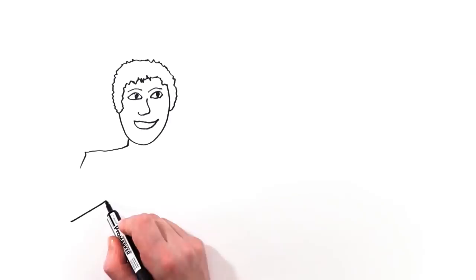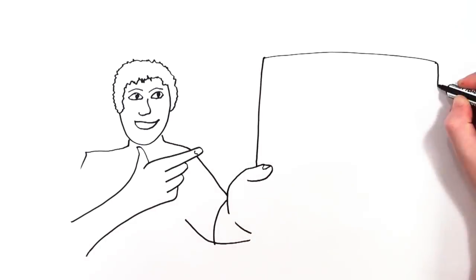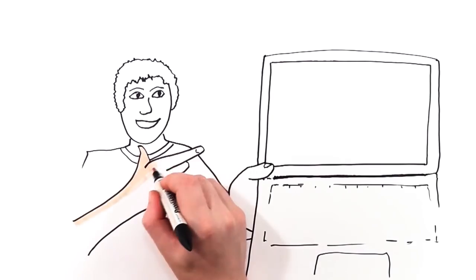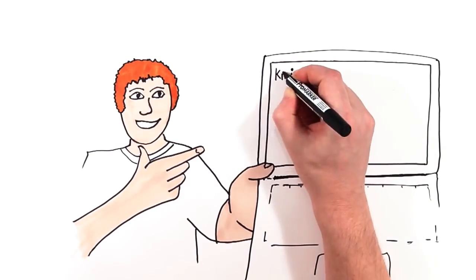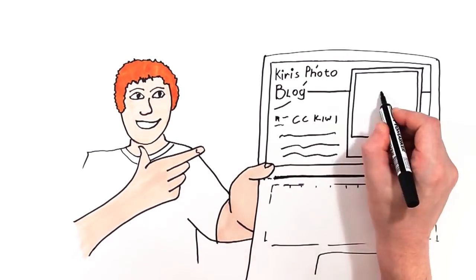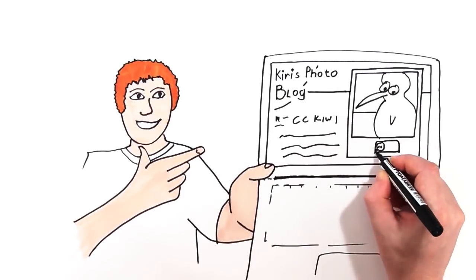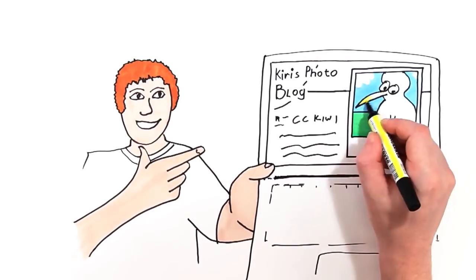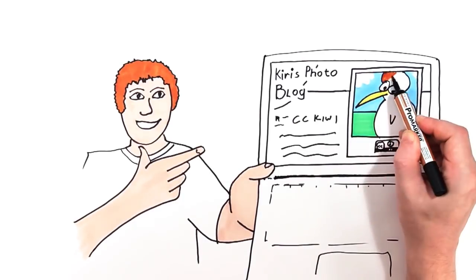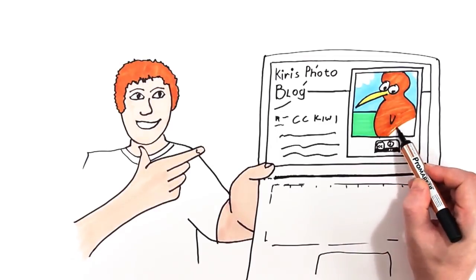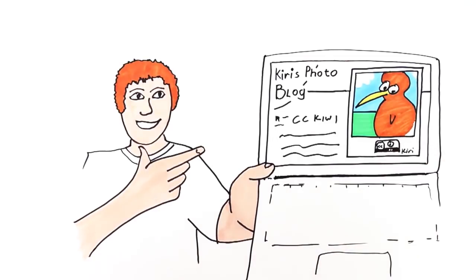Zach downloads a photo called CC Kiwi that he wants to use in his science project. He can do this without asking Kiri, the photographer, first, because she's already given permission with a Creative Commons license. Kiri's license is legally robust but easy for Zach to understand. She's told the world, including Zach, that they can use CC Kiwi as long as they acknowledge her as the original photographer.